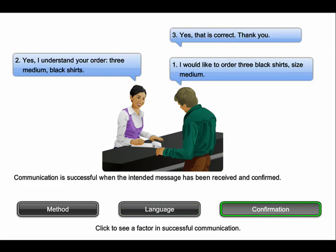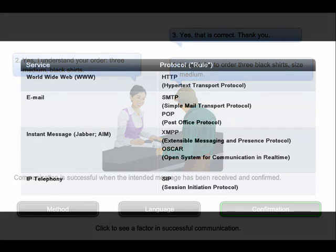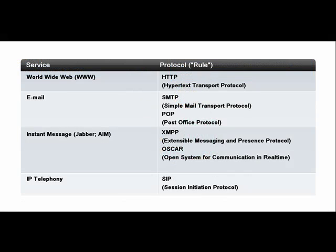As we see, the man places an order, the woman acknowledges the man's request, and then the man verifies that the woman is correct. Without these acknowledgments, neither the man nor the woman would be certain that the other person received their message correctly. Our human communication protocols are comparable to the protocols used in network communications. Data networks must have a sender and a receiver, an agreed-upon transmission method, a common language, and acknowledgments to ensure that messages are being sent successfully. You will study network protocols in more depth later, but for now understand that network protocols are very comparable to the human communication rules we use every day.